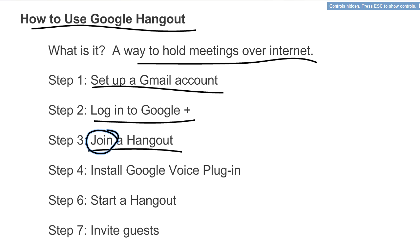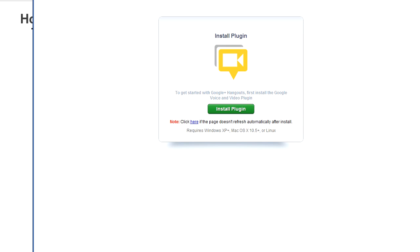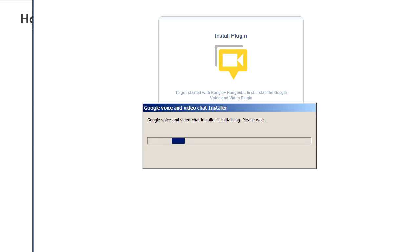Now, if you haven't used Google Hangout before, you're going to have to install a plug-in called Google Voice. That's what enables your computer to be able to share your audio and your video with other people. It's going to bring up a window that invites you to install the Google Voice plug-in. Go ahead and do that - just click on Install Plug-in and it's going to begin to do that for you.